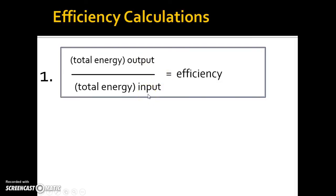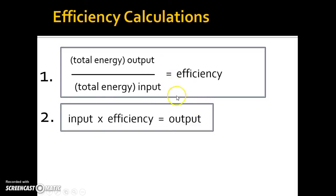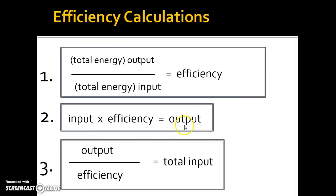What's nice about this equation is you can rearrange it. If you have any two of these quantities, you can figure out the third. To solve for output, multiply both sides by input — input cancels on the right, leaving output equals input times efficiency. To solve for input, divide both sides by efficiency, giving input equals output divided by efficiency.